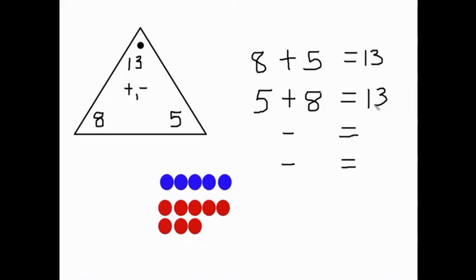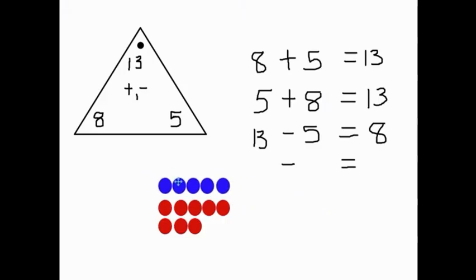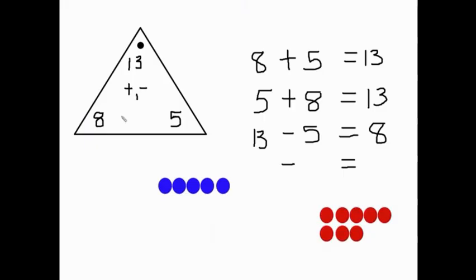Next, we're going to look at the subtraction problem. With subtraction, you always want to start with the largest amount. So 13 is your total or your whole. And if you're taking part of that away, it doesn't matter which part you start with first. We can start with five — if we're taking five away, you're going to be left with eight. So 13 take away five equals eight. And then switching the order of the number you're subtracting: the whole minus one of the small parts, 13 minus eight equals five. So you're looking at part, part, whole — whole minus part equals part, part plus part equals whole. We'll be practicing this more together in our live session.